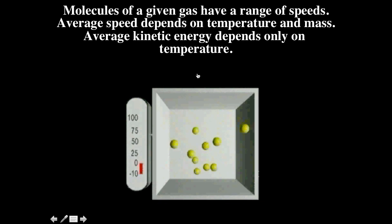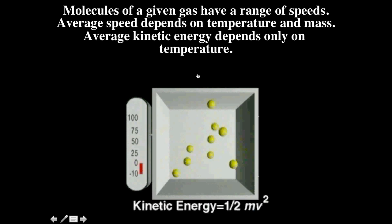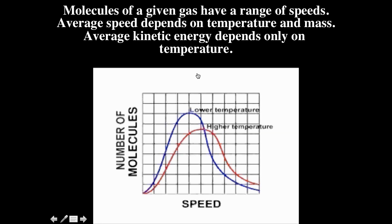At any given temperature, the molecules of a gas are in continual motion. At any instance, some molecules have more kinetic energy than others. With increasing temperature, the average kinetic energy increases in proportion to the absolute temperature. This graph shows the distribution of molecular speeds for a particular gas at two different temperatures. Notice that the most probable molecular speed, given by the peak of the curve, increases as the temperature increases.